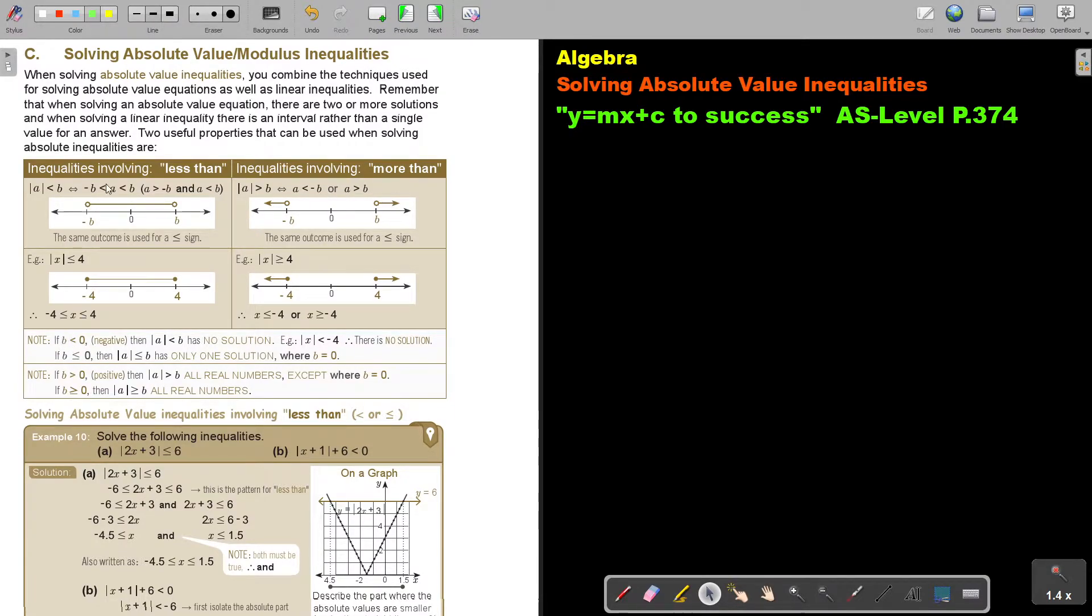Don't forget, if b is smaller than 0, that means a negative, then because this one cannot be negative, then there's no solution. If it's smaller and 0, then it means it's just where it's equal, then it's only that one solution, because the smaller is excluded. If it's bigger than 0, then it's all the numbers, but 0 is not included. But if it's bigger and equal to 0, then it's all the real numbers. It's just bringing a little bit of that value of b in.